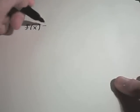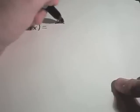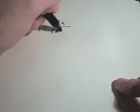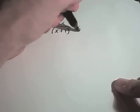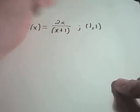Let's do some more complicated ones. In all of these, we're going to find the equation of the tangent line. Suppose we want to find the equation of the tangent line that lies on the graph of 2x over (x plus 1), and we want to do this at the point (1, 1).